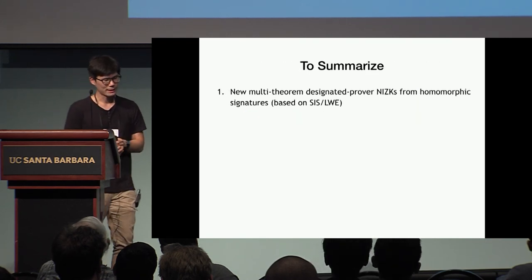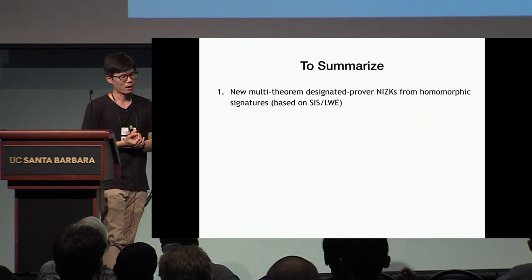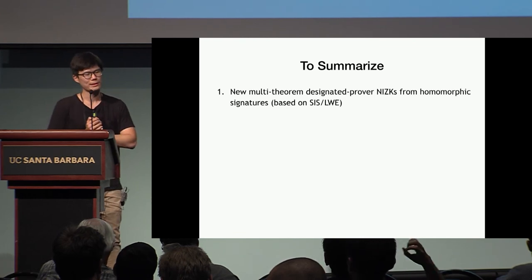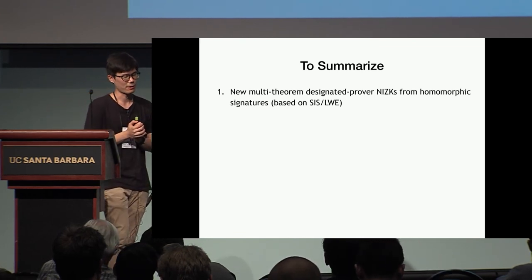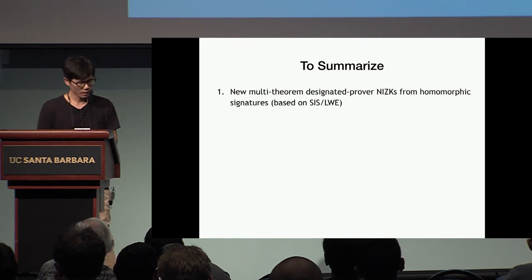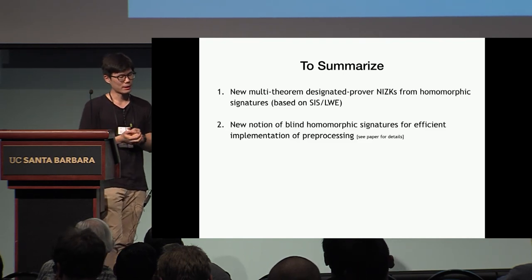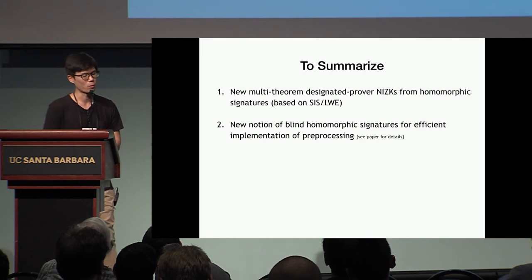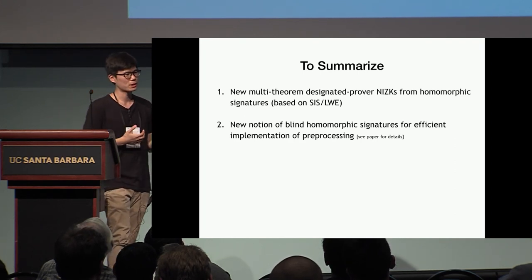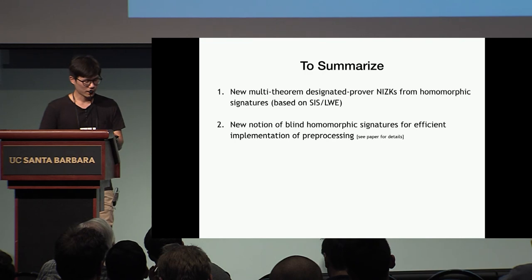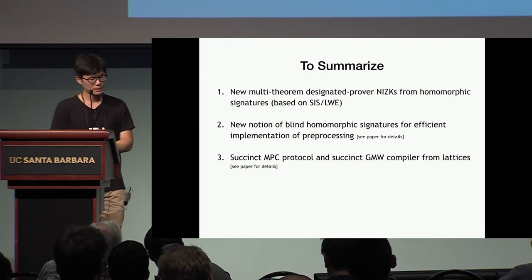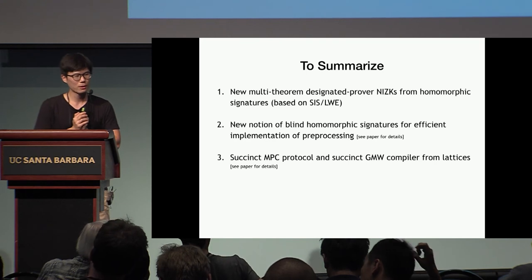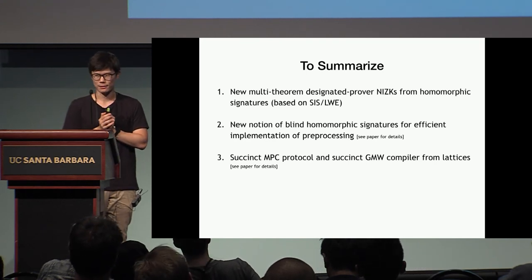To summarize, we get new multi-theorem designated prover NIZK from homomorphic signatures, which can be based on either SIS or LWE. We also introduced a new notion of blind homomorphic signatures for efficient implementation of the pre-processing step, and we apply our construction to MPC, obtaining succinct MPC protocols and a succinct GMW compiler instantiable from lattices.